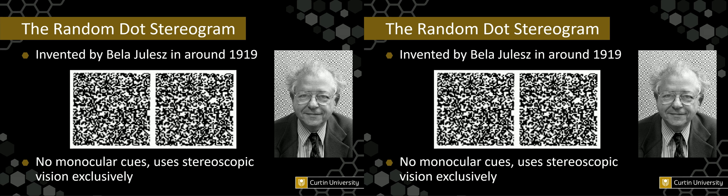A little bit of background about the random dot stereogram — invented by Bela Julesz. John Merritt kindly got my pronunciation right. John did some work with Bela a long time ago. He invented this technique of showing a random field in one eye and almost the same random dot pattern in the other eye, except offset slightly. How many people in the audience have worked out what's in the centre of this random dot stereogram? A few people. I think this one's a square — yes, this one's a square. This is one of Bela's very early ones.